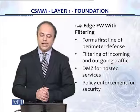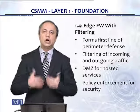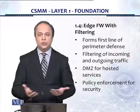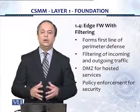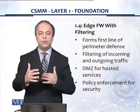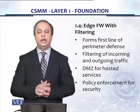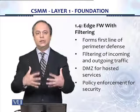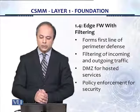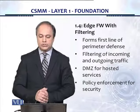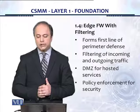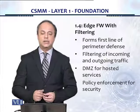Control 1.4 is an edge firewall with filtering. This is really the start of perimeter security. At the foundation layer of the Cybersecurity Maturity Matrix, we're not asking for a very expensive or full-featured next-generation firewall — just something at the edge to filter, block, and allow traffic, and to create logs. It forms the first line of perimeter defense, with filtering of incoming and outgoing traffic, a DMZ for hosted services like email or web servers, and basic policy enforcement.